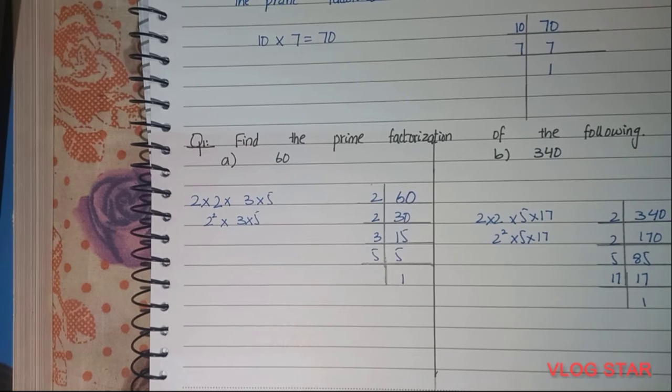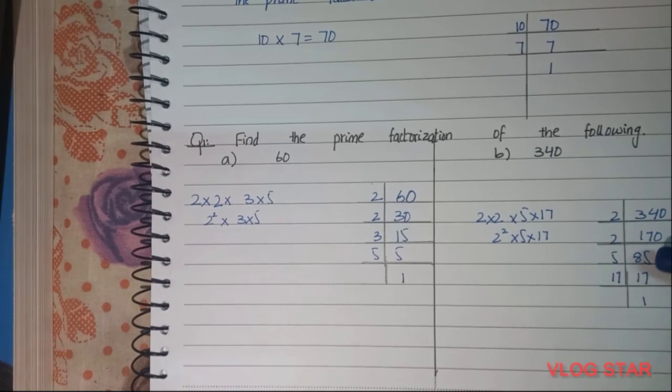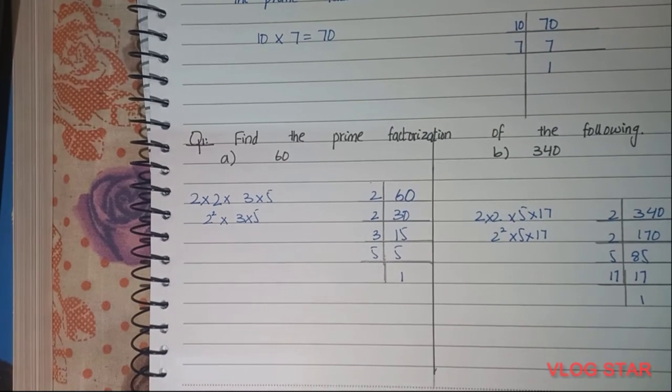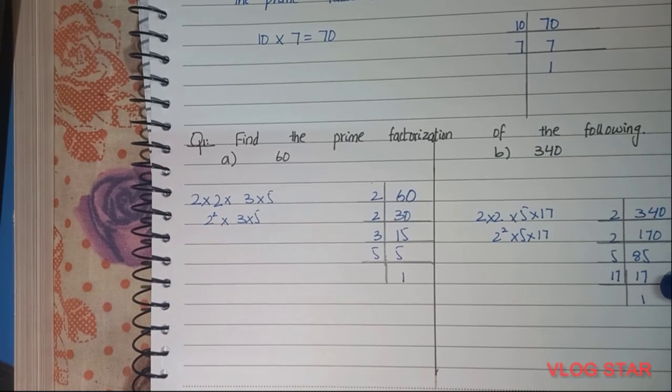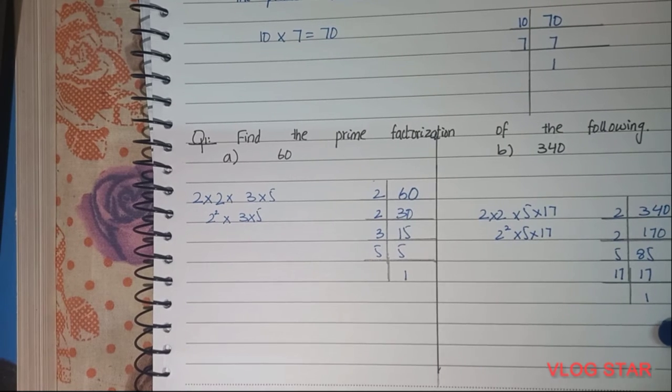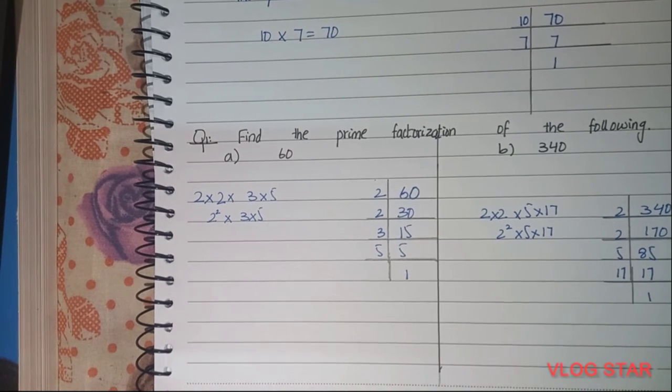Let's try it with 5, because the last digit is 5. 85 ÷ 5 = 17, and 17 is a prime number, so 17 ÷ 17 = 1.